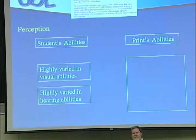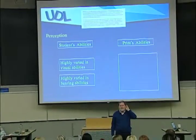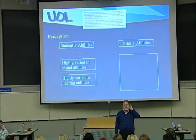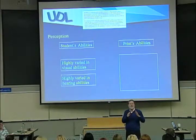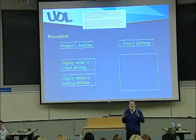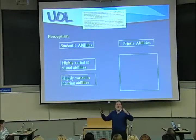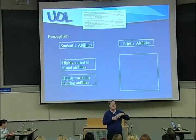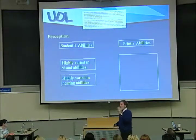Can someone think of a disability of print? It's not able to conform itself to these differences. Give me a concrete example. If someone is an auditory learner, print cannot become that. It can't talk, it can't do anything orally. It's only got one way of communicating: visual, period. So that's a problem.